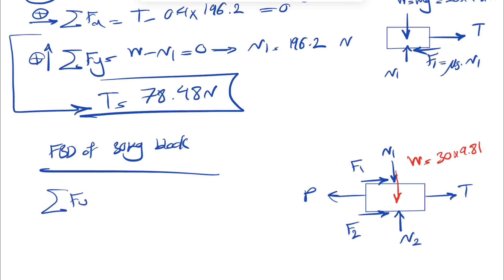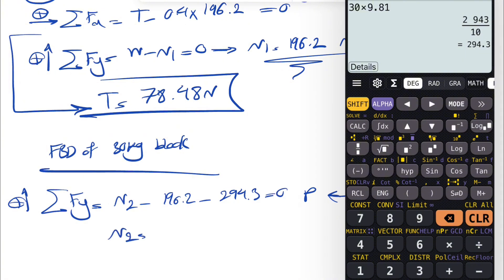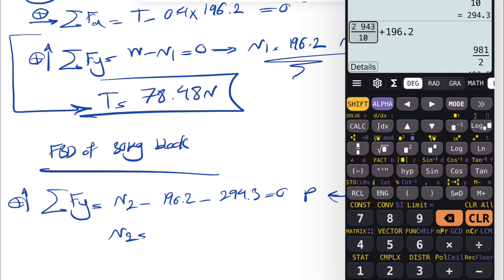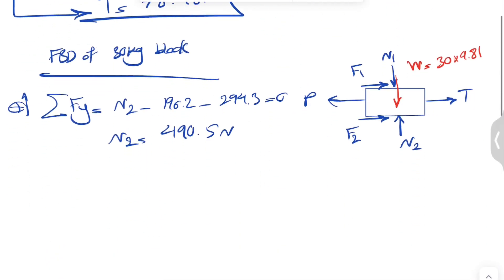Using the equilibrium equation for Y forces: N2 minus N1 minus weight = 0, so N2 = 196.2 + 30 × 9.81 = 196.2 + 294.3 = 490.5 Newtons.